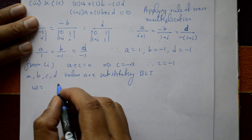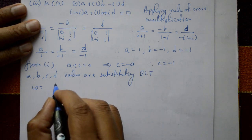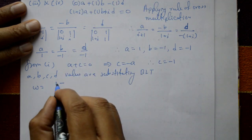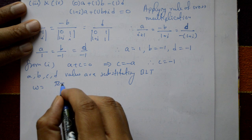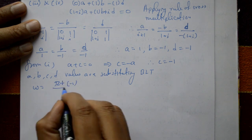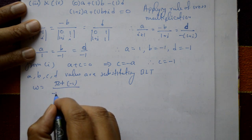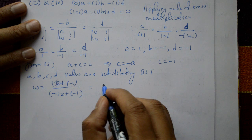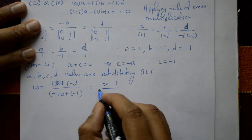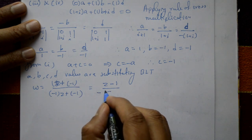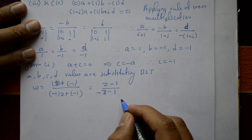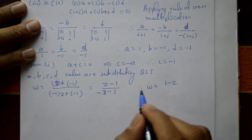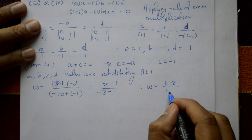Substituting a equal to 1, b equal to minus 1, c equal to minus 1, d equal to minus 1 into the bilinear transformation: w equals (z minus 1) / (minus z minus 1). Factoring out minus 1 from the denominator, w equals (1 minus z) / (1 plus z). This is the required bilinear transformation.